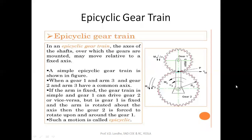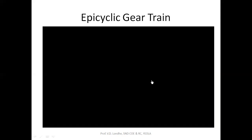Next is the epicyclic gear train. The basic difference from the previous three gear trains is that here gear one and gear two are connected by a link. If this link is fixed, the two gears form a simple gear train, but if the link is free to move, either gear will have relative motion with respect to the other. This is the fundamental difference between simple, compound, or reverted gear trains and the epicyclic gear train.